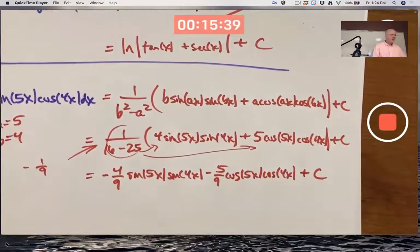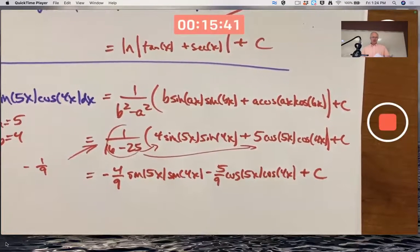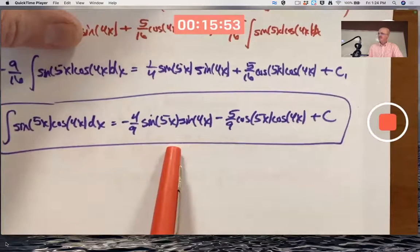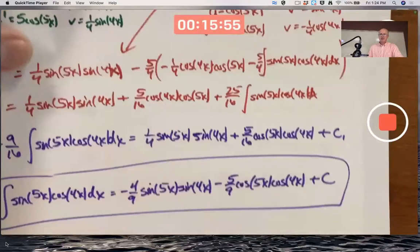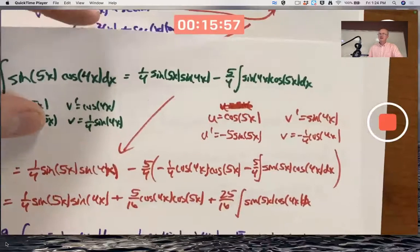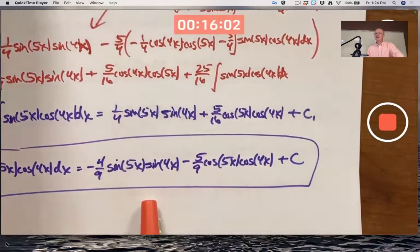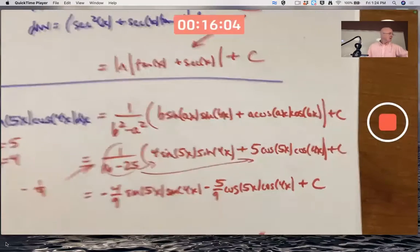Is that the same thing I got while you were working on your mini exam? Let me remember it here. Negative four ninths sine 5x sine 4x, minus 5 ninths cos 5x cos 4x plus c. Guess what? Same thing. Yeah, there's my integration by parts stuff. I got the same answer. I was so happy. Okay, I was afraid I was going to get the wrong answer.